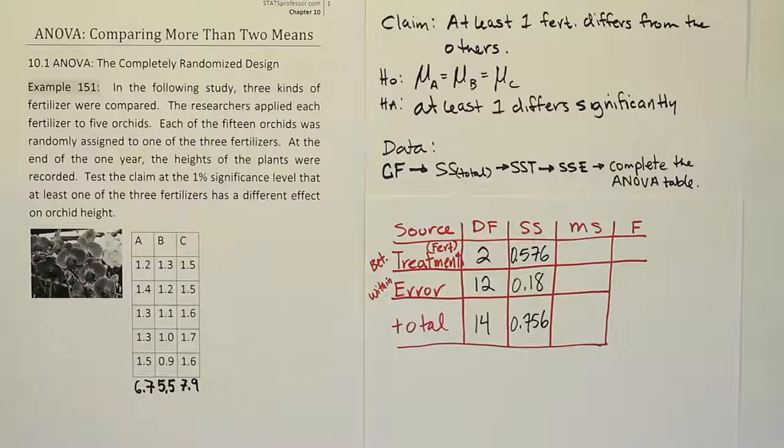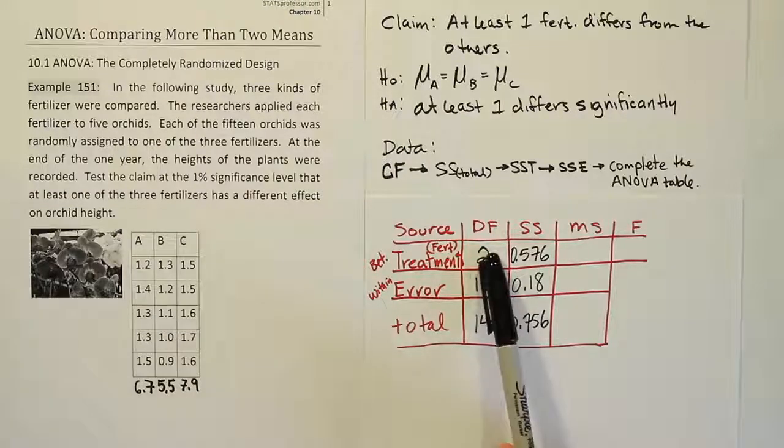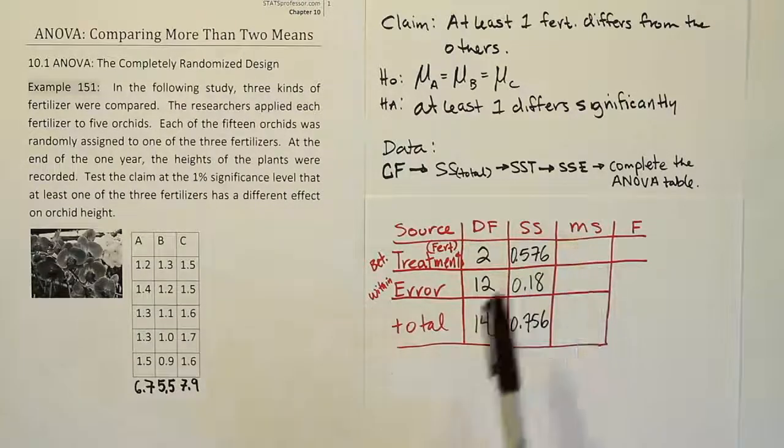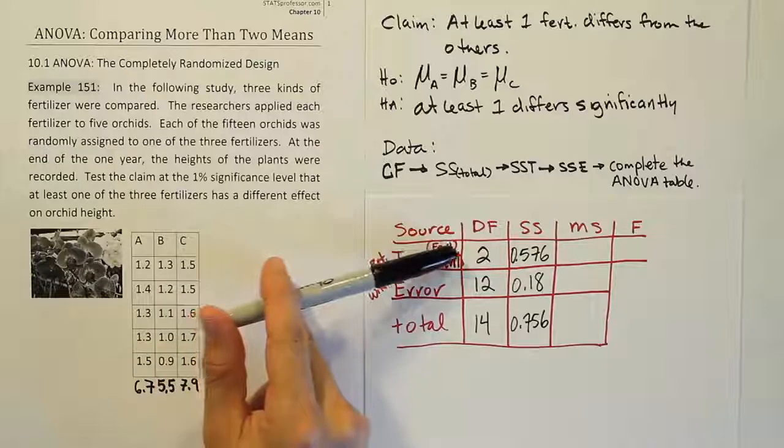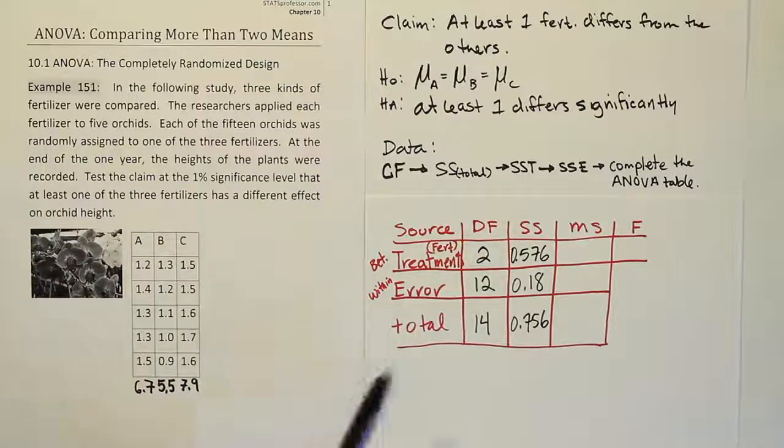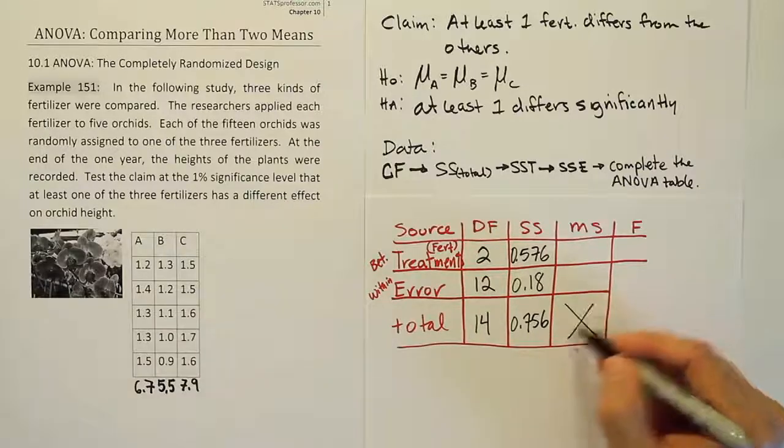To finish it up, we're going to now complete the rest of the table right here on the table. We're going to get the mean squares by simply dividing straight across in each row here. We don't need to worry about it for total, so we're really going to ignore this space here. Don't pay any attention to that space.